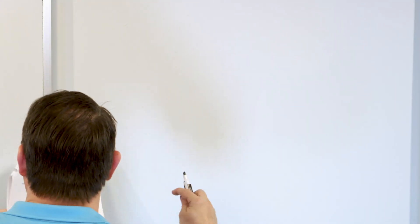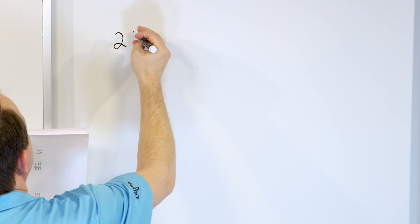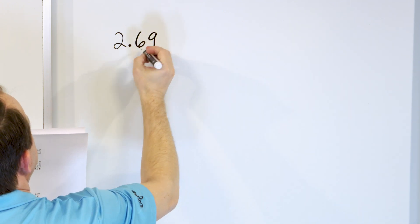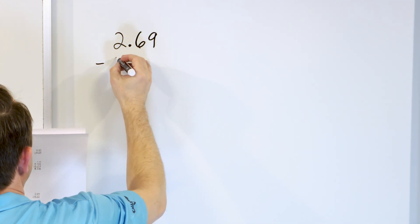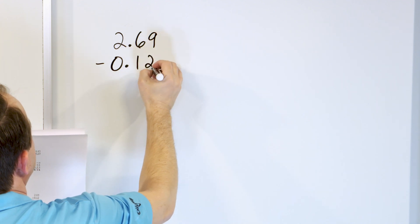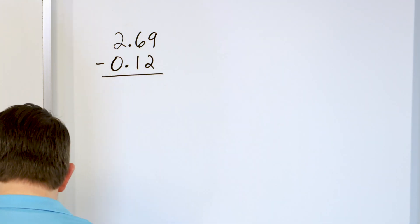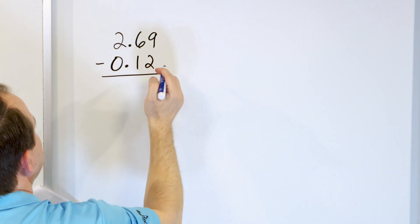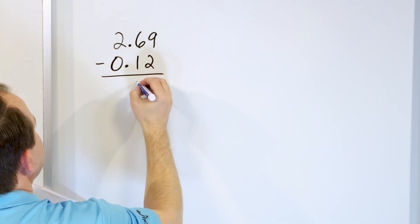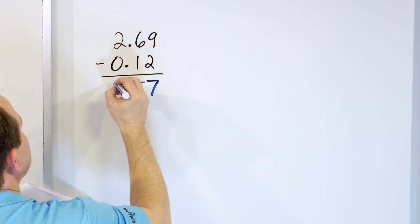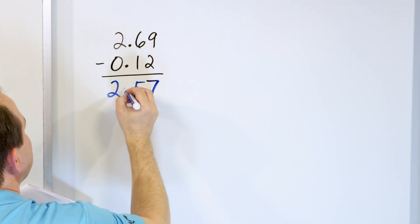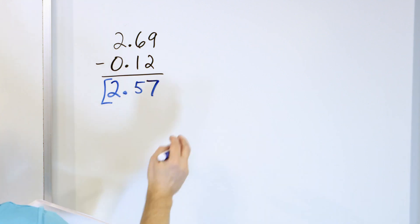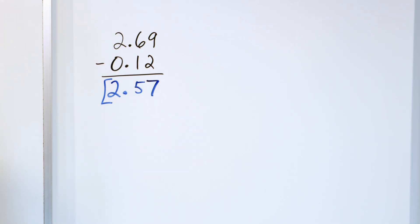All right, next problem. We are now past the halfway point. What about 2.69? And we'll subtract from that 0.12. 9 going down by 2: 8, 7. 9 minus 2 is 7. 6 minus 1 is 5. And 2 minus 0 is 2. And the decimal flows right out for 2.57.